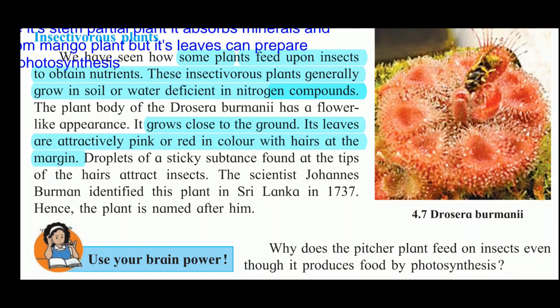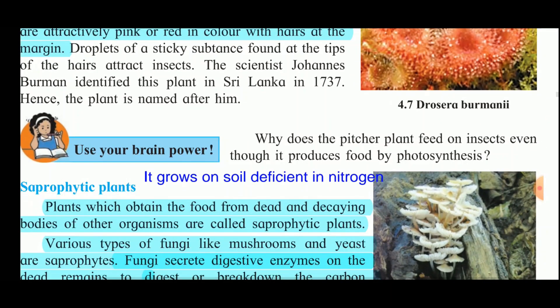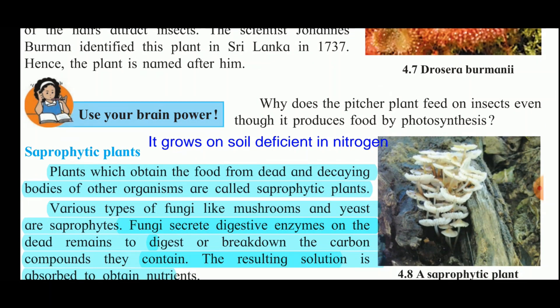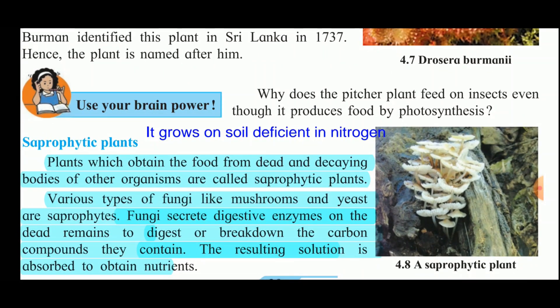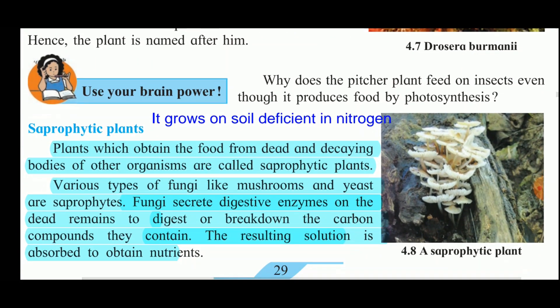The scientist Johan Burman identified this plant in Sri Lanka in 1737, and the plant is named after him. The question is: why does the Drosera plant feed on insects even though it produces food by photosynthesis? Although it is green and can produce food by photosynthesis, since it grows in swamps or nitrogen-deficient soil, it feeds on insects to fulfill its nitrogen requirement.